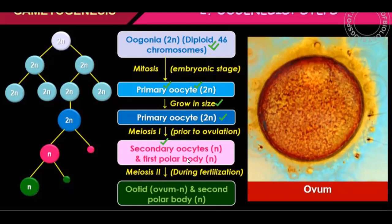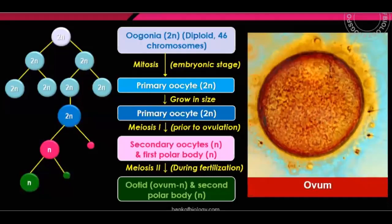We don't know if the first polar body degenerates or not, but it does not participate in reproduction. After meiosis 1, it becomes meiosis 2. Meiosis 2 is completed only at fertilization. Every month the secondary oocyte is released into the fallopian tubes. If fertilization occurs, meiosis 2 completes; if not, it is released from the body.